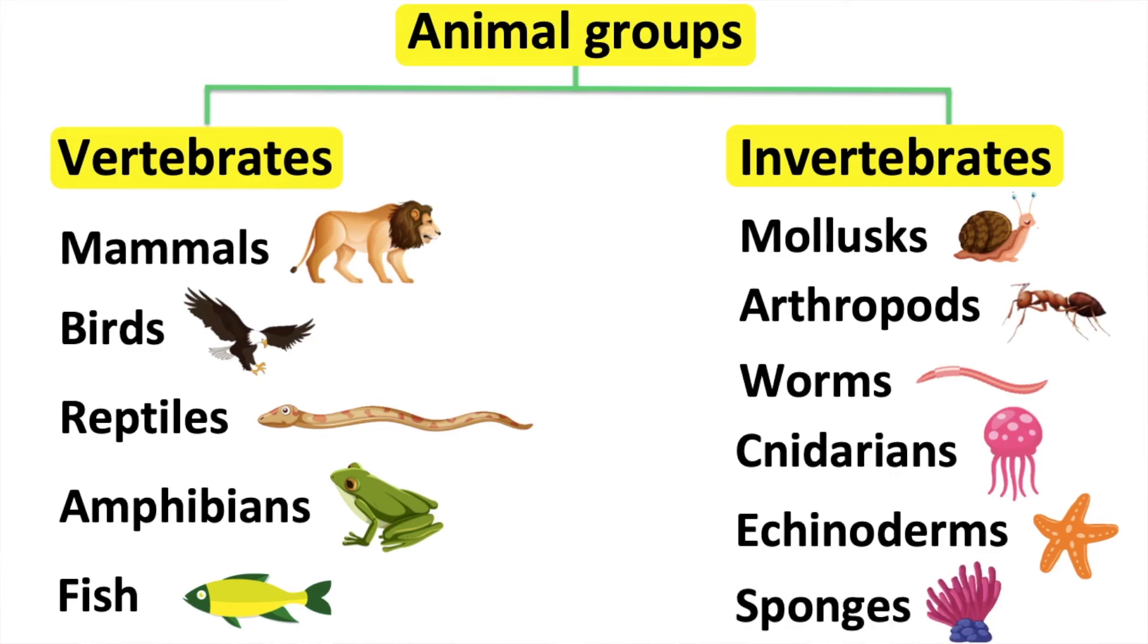Sponges are also known as poriferans. These invertebrates are found in deep water and they have pores and can't swim.